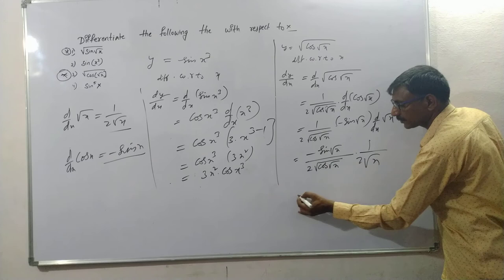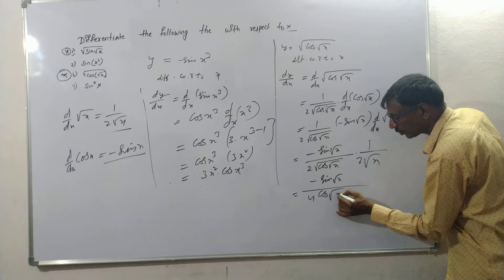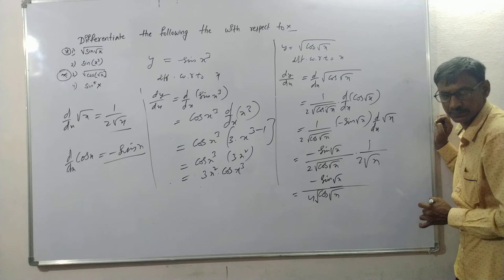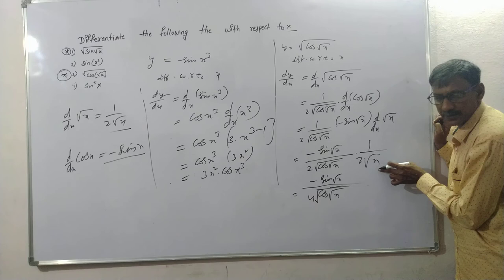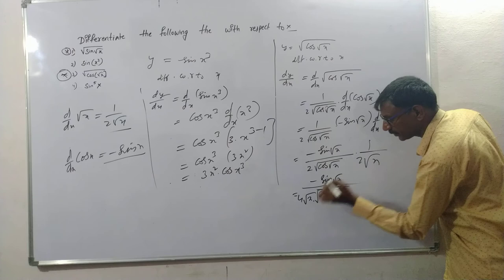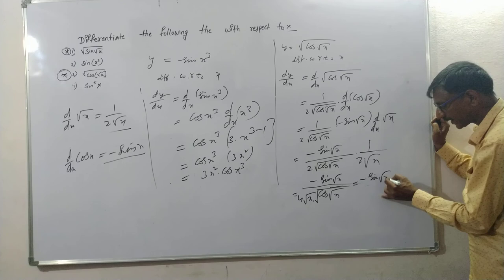The 2's combine — so the result is cosine of root x divided by 2 root x. This uses the root law: if you have root x, its derivative is 1 by 2 root x. So the final answer is cosine of root x divided by 2 root x, which can also be written as 1 over 4 root x into cosine of root x.